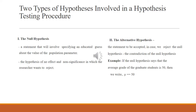The first step is to state the null hypothesis and alternative hypothesis. In simple words, the null hypothesis is the hypothesis which we state for possible rejection. Technically, it means a statement that specifies an educated guess about the value of the population parameter. So the null hypothesis is stated for possible rejection and is also a statement or guess about the population parameter.